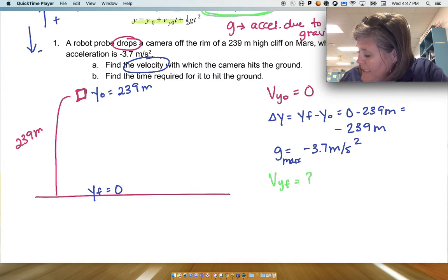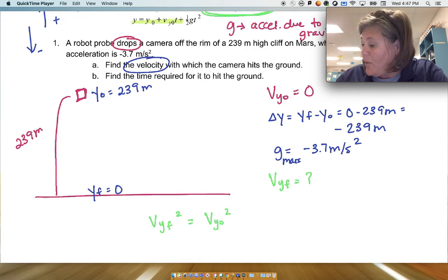So I'm going to use the equation up here that does not include the time. So this is going to be VY final squared equals VY not squared. Oh, but that's zero.